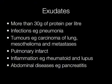Exudates contain more than 30g of protein per litre. Causes include infections such as pneumonia, tumours — for example carcinoma of the lung, mesothelioma and metastases — pulmonary infarcts, inflammation, and abdominal diseases such as acute pancreatitis.